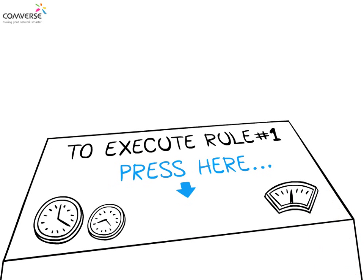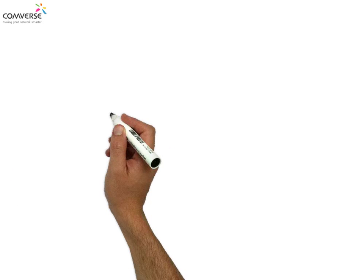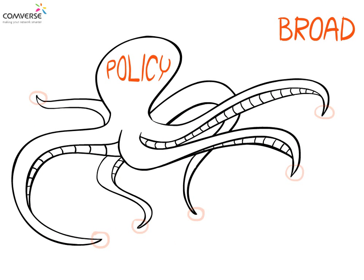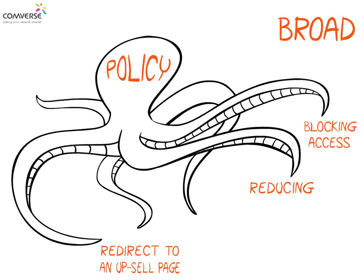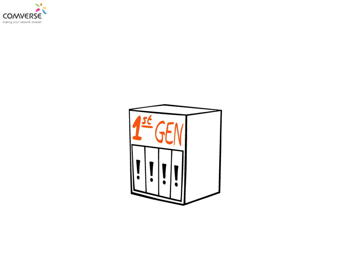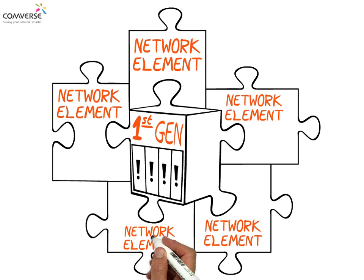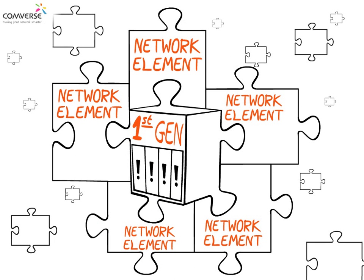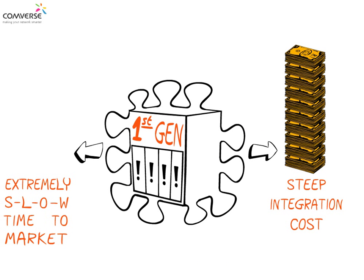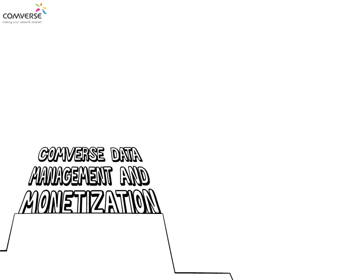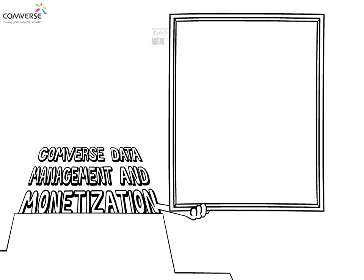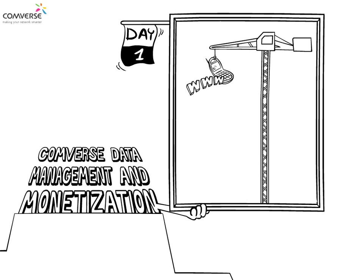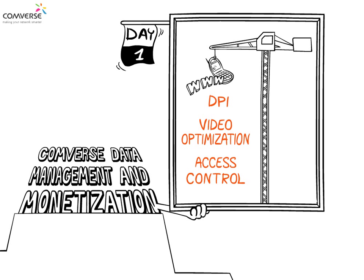Plan definition alone is not enough, as policy rules need to be enforced and executed. The Converse solution is also broad, offering a complete policy and enforcement framework — for example, blocking subscriber access, redirecting them to an upsell page, reducing or increasing bandwidth of a specific application during a specific time period, and so on. Most policy solutions available today need to integrate with multiple network elements in order to implement an end-to-end policy, resulting in high complexity, steep integration costs, and extremely slow time to market. Converse Data Management and Monetization offers this entire framework from day one, leveraging a wide range of enforcement services, including DPI, video optimization, access control, and more.